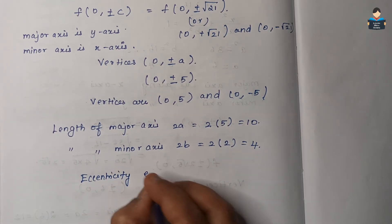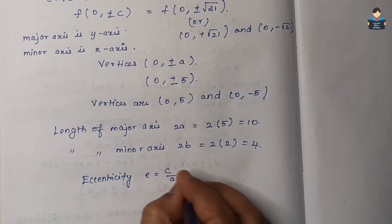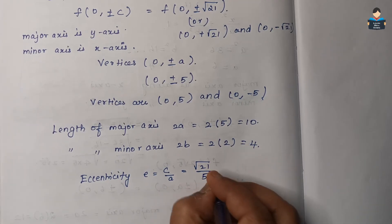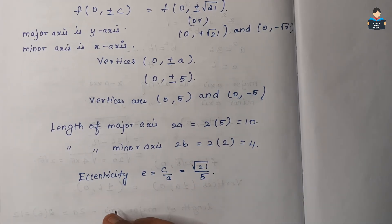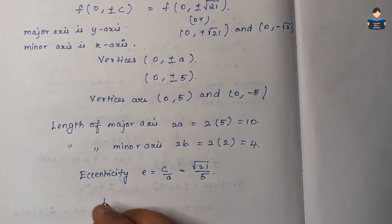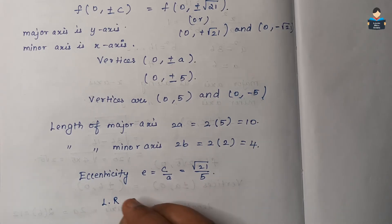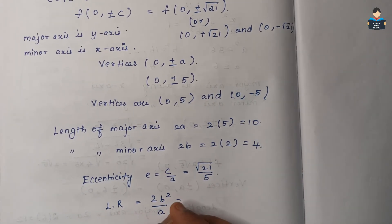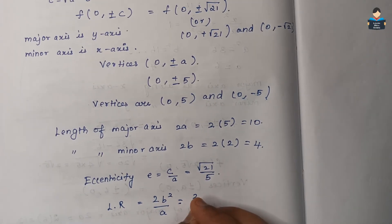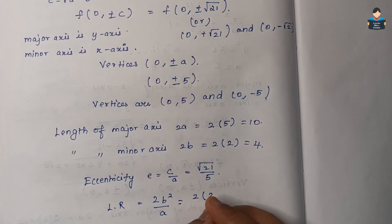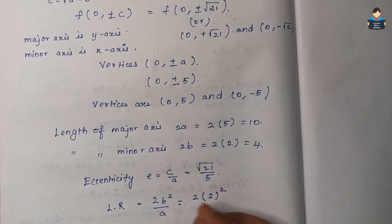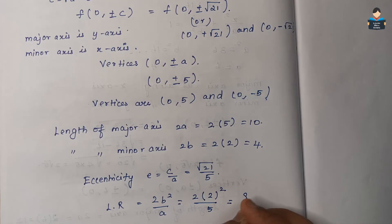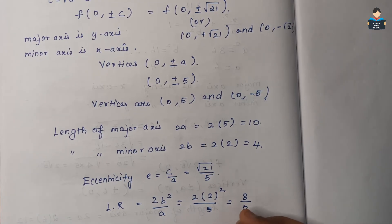Eccentricity e = c / a = √21 / 5. The latus rectum LR = 2b² / a = 2 × 4 / 5 = 8 / 5.